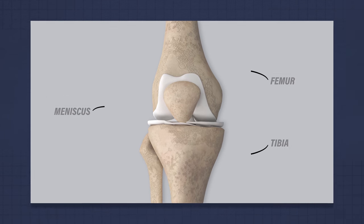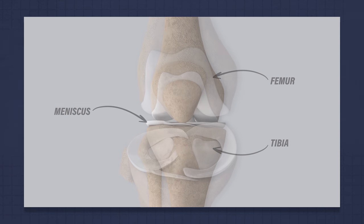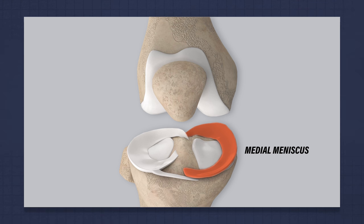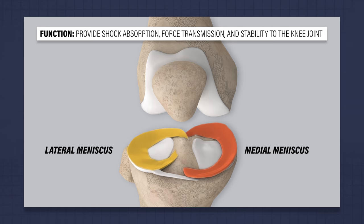The meniscus is a fibrocartilaginous structure located between the femur or thigh bone and tibia or shin bone. There are two in each knee: the medial meniscus located on the inner portion of the knee and the lateral meniscus located on the outer portion. They function to provide shock absorption, force transmission, and stability to the knee joint.